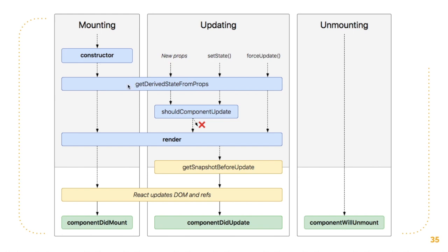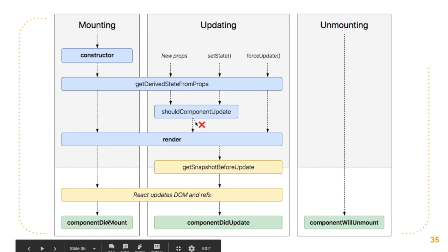After getDerivedStateFromProps is called, the next one is the render method, which goes ahead and renders the React elements. Then React actually updates the DOM and the refs — we will discuss refs later. After that, the componentDidMount method is called, which means the component did get mounted into the DOM.